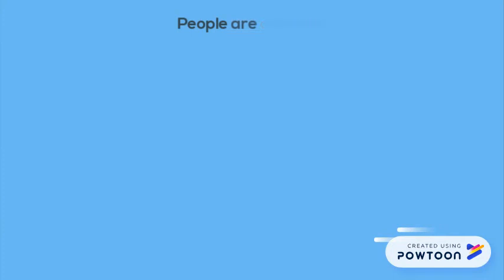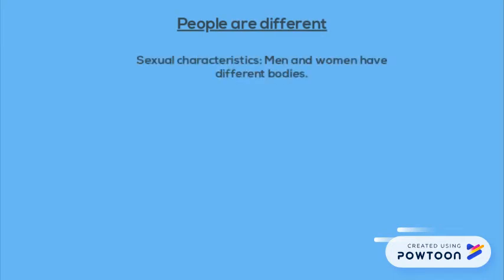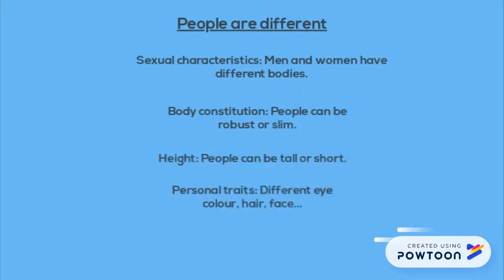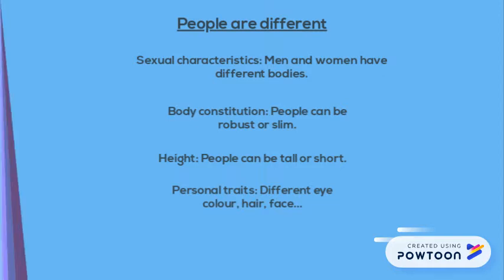When we talk about our body, we have to say that we are all different. Sexual characteristics: men and women have different bodies. Body constitution: people can be robust or slim. Height: people can be tall or short. And personal traits: we've got different eye color, different hair, faces, etc.